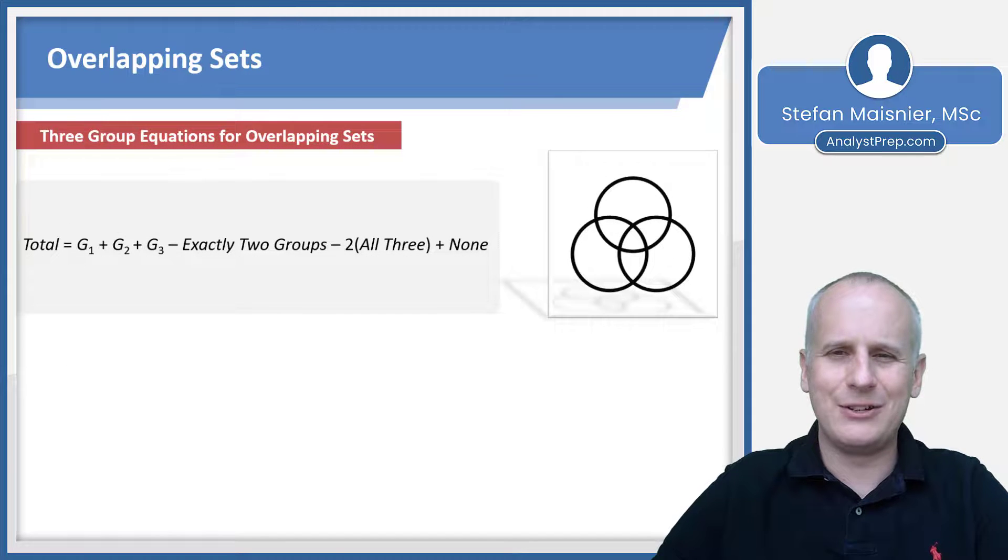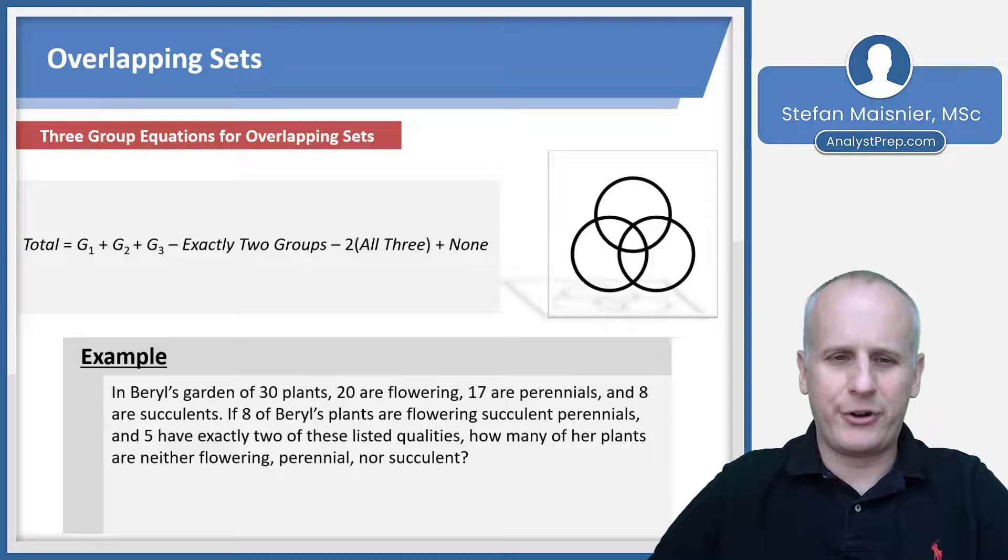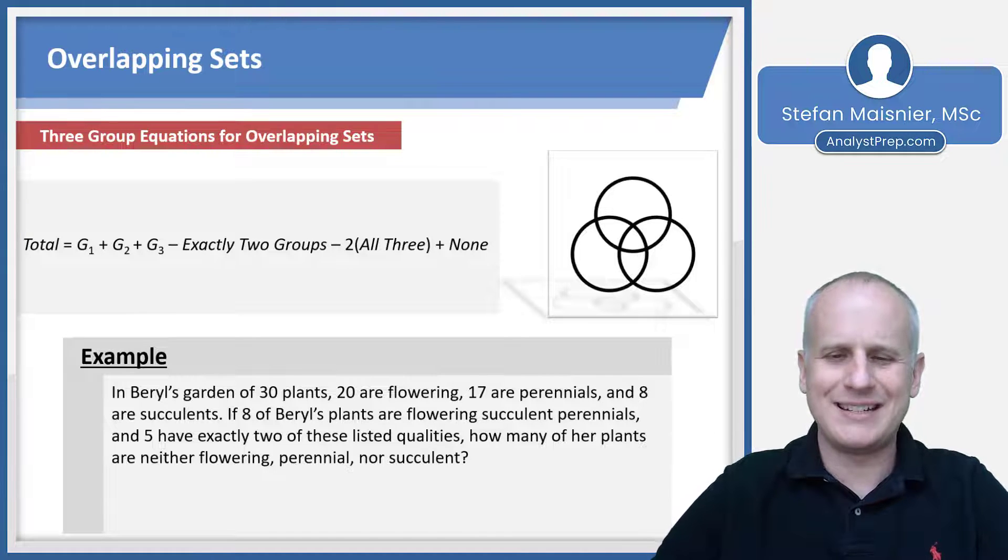Let's take a look at one more example. We have Barrel's Garden and we're going to use the formula above. We know in Barrel's Garden of 30 plants, 20 are flowering, 17 are perennials, and eight are succulents. If eight of Barrel's plants are flowering, succulent, perennials, and five have exactly two of these listed qualities, how many of her plants are neither flowering, perennial, nor succulent?